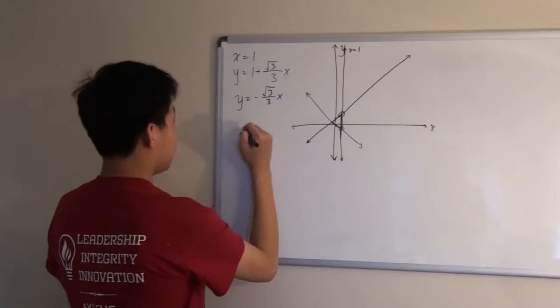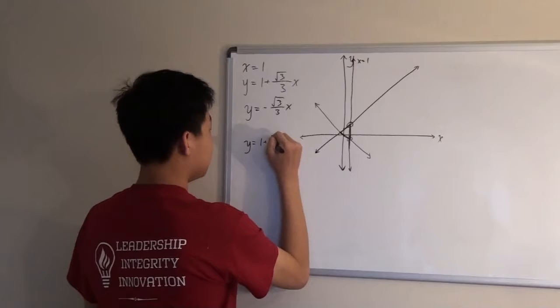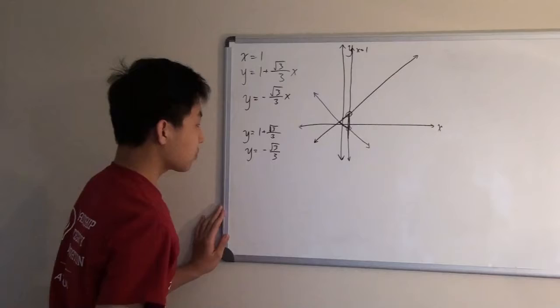So, when we do that, in the first one, we get y equals 1 plus root 3 over 3. And the next one, we get y equals negative root 3 over 3.